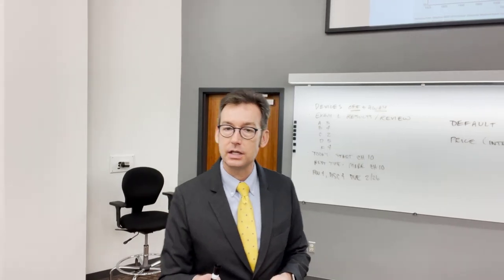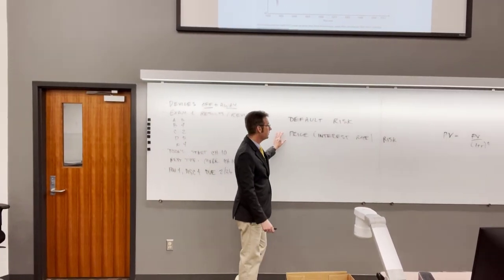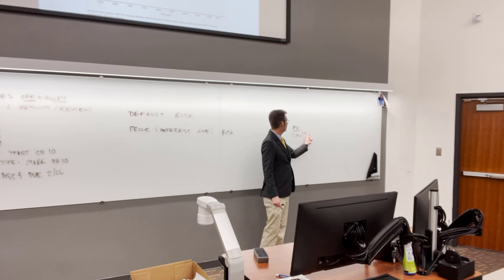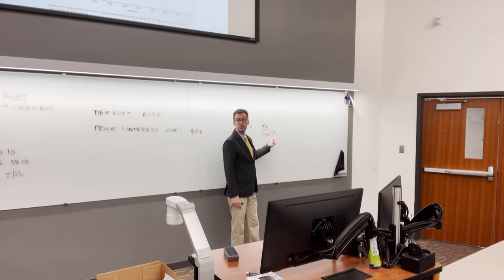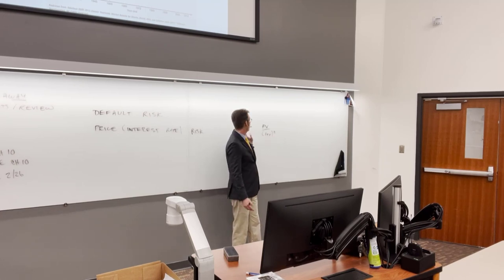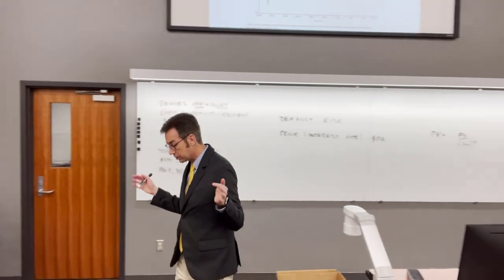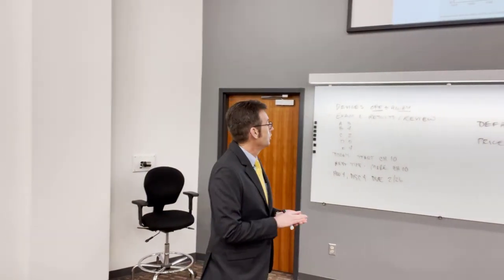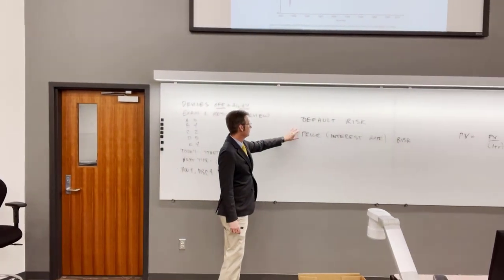We call the Treasury Bill the risk-free asset — it's not truly risk-free, but it's the closest we have. Its maturity is only 0.25 of a year, so any change in R gets magnified only to the 0.25 power. Contrast that to a 30-year Treasury bond where any change in interest rate gets magnified to the 30th power — much bigger. So we have much higher interest rate risk with long terms to maturity. The Treasury Bill has very little, so we call it near zero for interest rate risk.